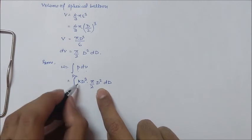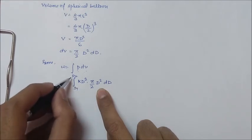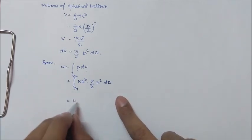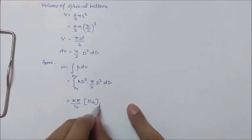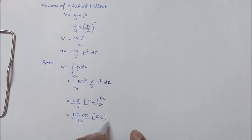As you can see, we have calculated value of k as 150 and d1 was given and d2 we have calculated. So now we will integrate this thing: k pi by 2 integral d to the power 5 from d1 to d2. Now we will put the values as 150 into pi by 2, d to the power 6, limits d1 to 1.44.